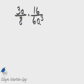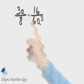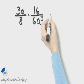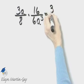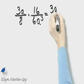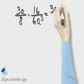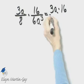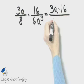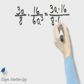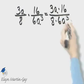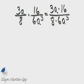Let's perform this indicated operation. It is multiplication. So how do we multiply fractions? It's numerator 3a times numerator 16 over denominator 8 times denominator 6a cubed. And now let's simplify.